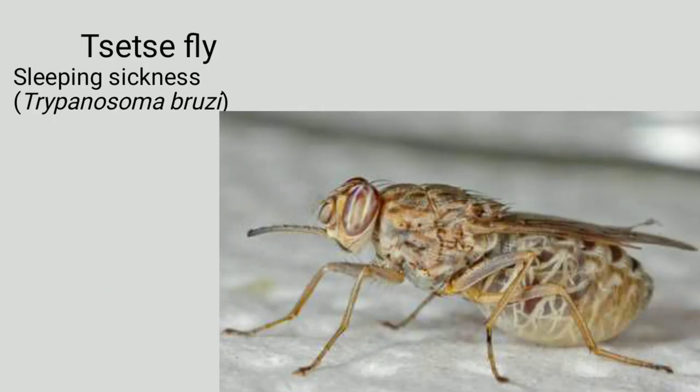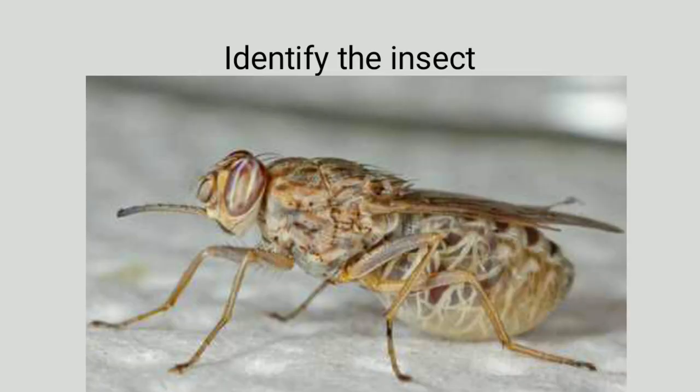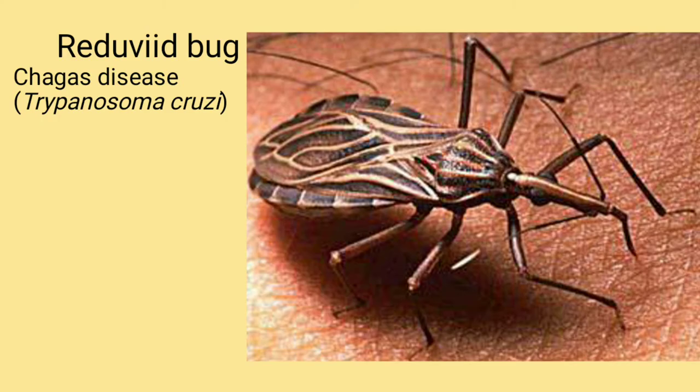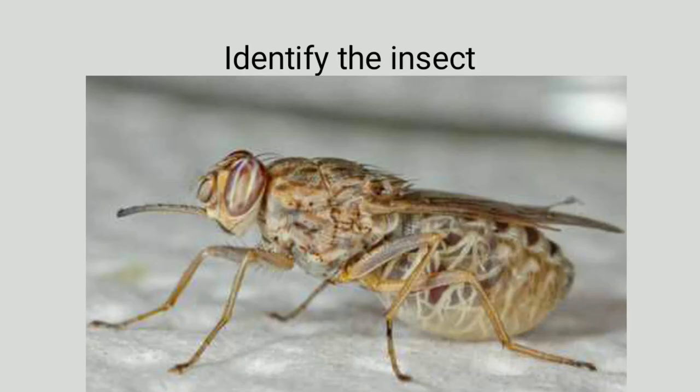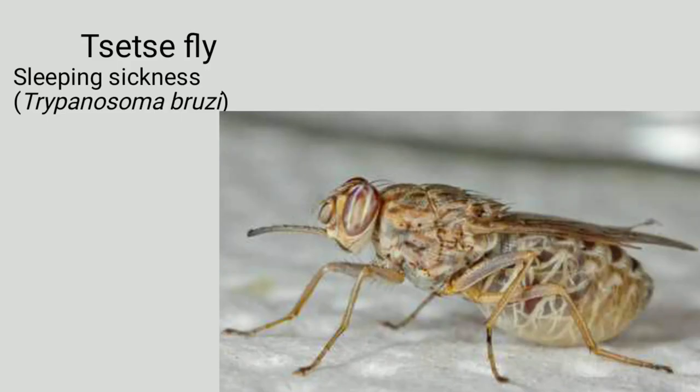Identify the insect: This is tsetse fly. It transmits sleeping sickness, caused by Trypanosoma brucei. So Trypanosoma cruzi causes Chagas disease, and Trypanosoma brucei causes sleeping sickness.